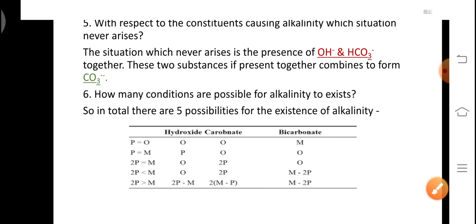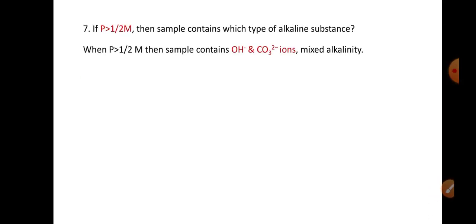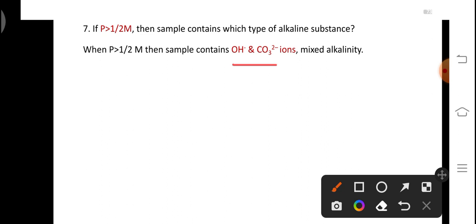This table you have to remember for answering other questions. For example, in a viva you may be asked: if P = 0, which alkalinity is present? From the table you can answer that bicarbonate is present. If P = M, then hydroxide ions are present. If P > M/2, then the sample contains mixed alkalinity with hydroxyl ions and carbonate ions.